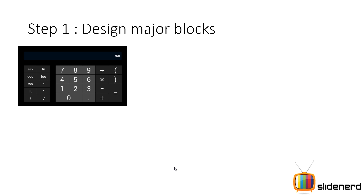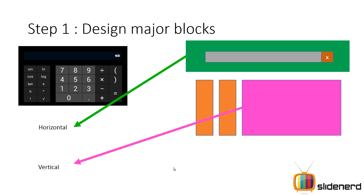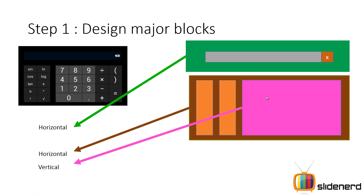Hey folks, this is Waves from Slide Nerd. In this video I'm going to jump into Eclipse, but before that I want to show you what I'm going to do. I have the EditText, the button, the horizontal LinearLayout, a block containing sine, cos, tan, and another block containing root and other buttons. These three blocks are horizontally placed next to each other, so they are inside a horizontal LinearLayout.